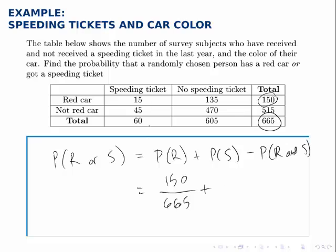The total number of people who got a speeding ticket is 60, because 15 people with a red car got a speeding ticket and 45 people without a red car got a speeding ticket for a total of 60. And then we need to subtract off the overlap, those with a red car and a speeding ticket.